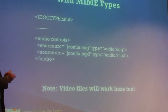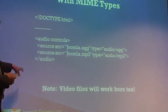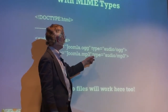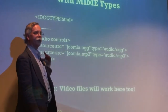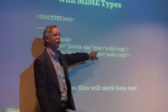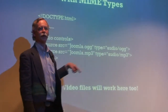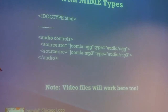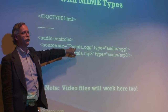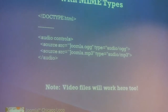Here's an example using MIME types. Putting the full type statement in your code makes it much more efficient, because the browser looks at the type and determines if it can decode that container and codec before even attempting to open the file. Otherwise, without that type specified, the browser is going to try to open the file and see if it knows how — which wastes seconds.